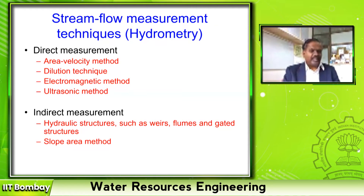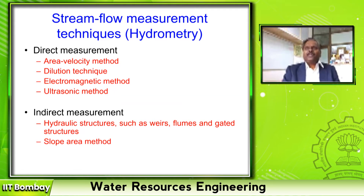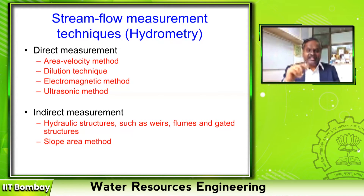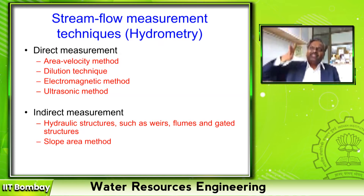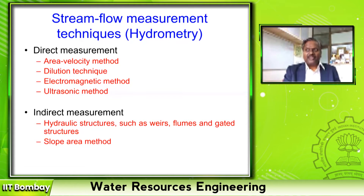The direct method is based on the continuity equation: discharge Q equals area times velocity. You measure the area of flow and the velocity of flow, multiply them, and get the discharge. In a hydraulics lab you measure using a collection tank — measuring the volume collected in a time period T, and volume divided by T gives the discharge. But for a river, we use the area-velocity method: directly measuring area and velocity, and their multiplication gives the discharge.